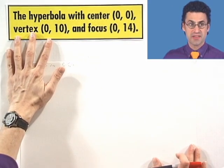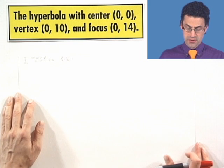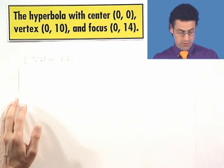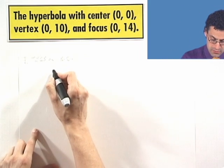Let's find the equation of the hyperbola that's centered at 0, 0 and has vertex at 0, 10 and focus at 0, 14. So how are we going to do this? Again, a little sketch goes a long way.